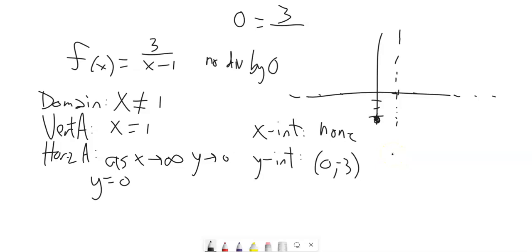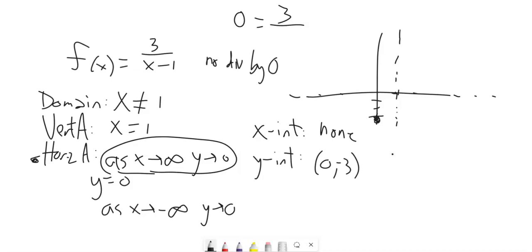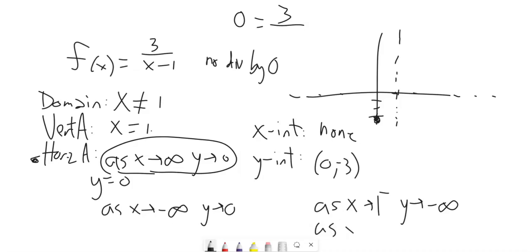For end behavior: horizontal asymptotes tell us the end behavior. As x approaches infinity, y approaches 0. As x approaches negative infinity, y approaches 0 as well. For local behavior, as x approaches the vertical asymptote 1 from the negative side: 3 over a negative number is negative, so y approaches negative infinity. As x approaches 1 from the positive side, the bottom is positive, so y approaches positive infinity. Let me grab Desmos to verify — 3 over x minus 1. There it is: asymptote at x=1, y-intercept at negative 3, no x-intercept.